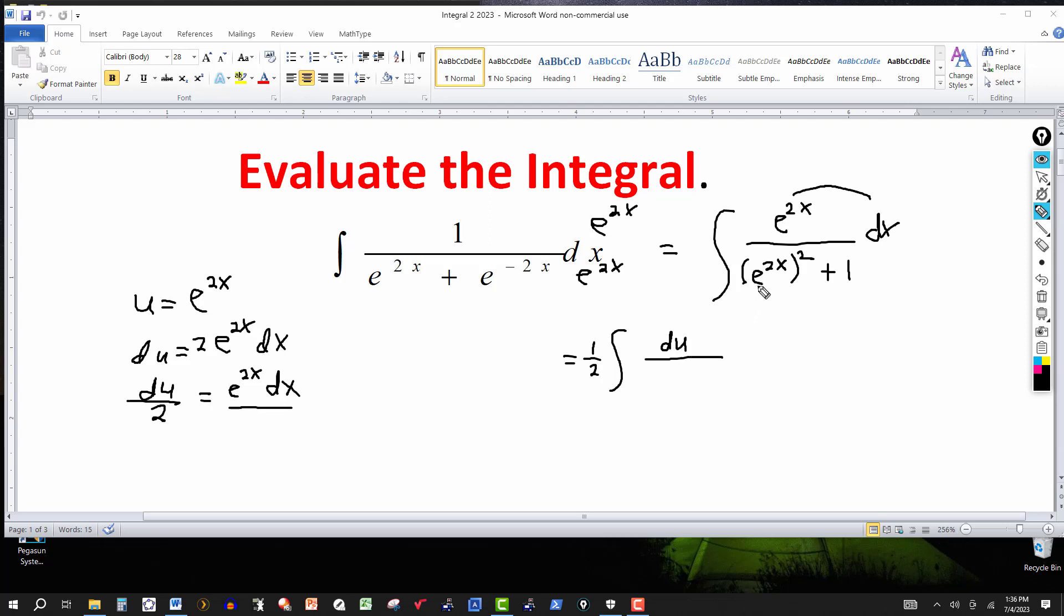And then in the denominator e to the 2x squared, so e to the 2x is u, so this would be u squared plus 1. And this integral here, you should recognize that as the one that leads to the arctangent.